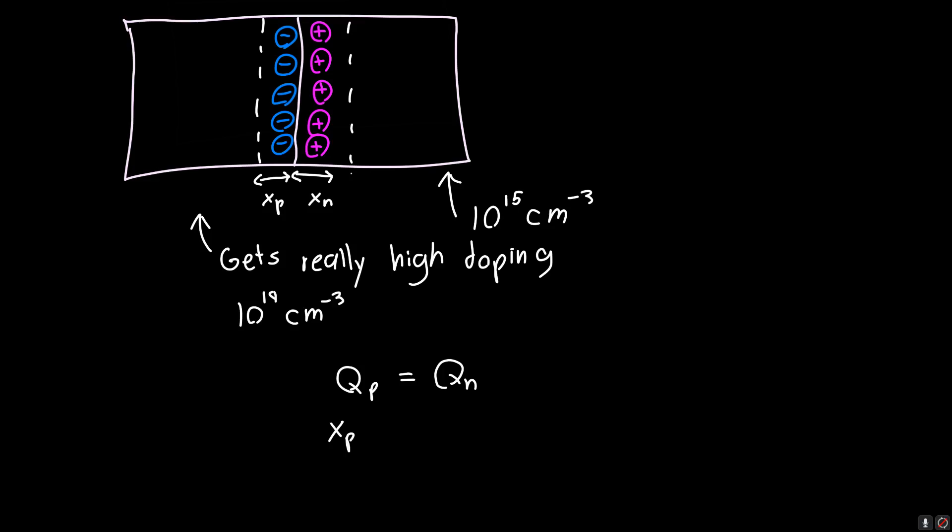If we have an abrupt depletion region, then the charge per unit area on each side is the width of the depletion region times the density of the charge. Same for the N region: XN times ND.